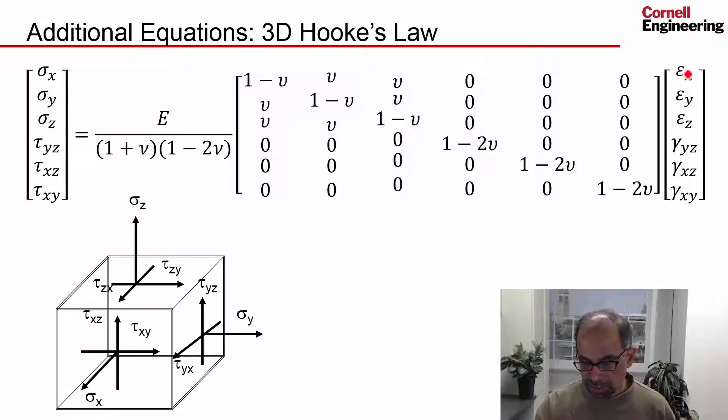So the stresses are related to the strains, and we have three normal strains and three shear strains. The assumptions embedded in here are that we are in the elastic range and that the material is isotropic. So we just need two constants, Young's modulus and Poisson's ratio, in these relations. And you can complicate these relations.